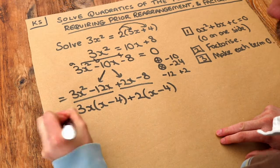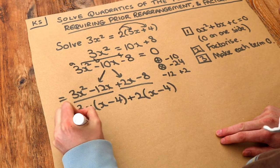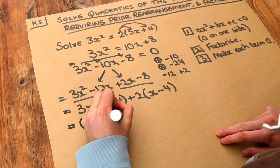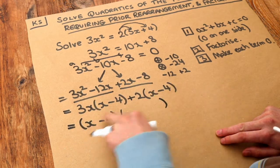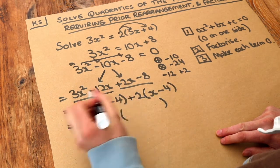Then the final step is, well, what does this and this have in common? Well, we can factorize out the x minus 4, open a new bracket and then say x minus 4 times what is 3x times x minus 4? Well, it's 3x.